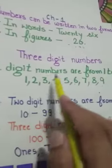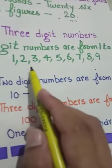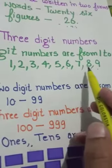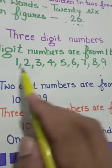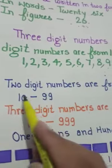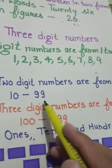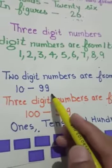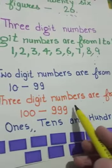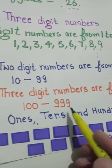One-digit numbers are from one to nine: one, two, three, four, five, six, seven, eight, and nine. Two-digit numbers are from ten to ninety-nine, and three-digit numbers are from one hundred to nine hundred ninety-nine.